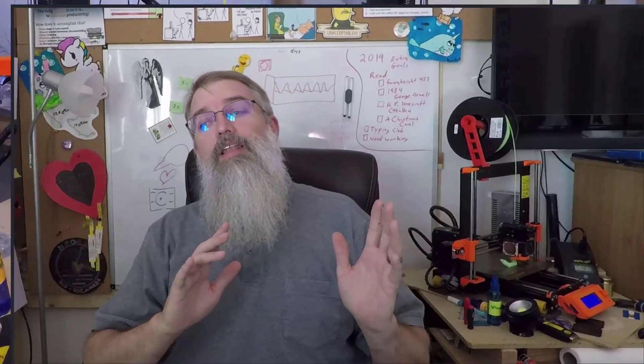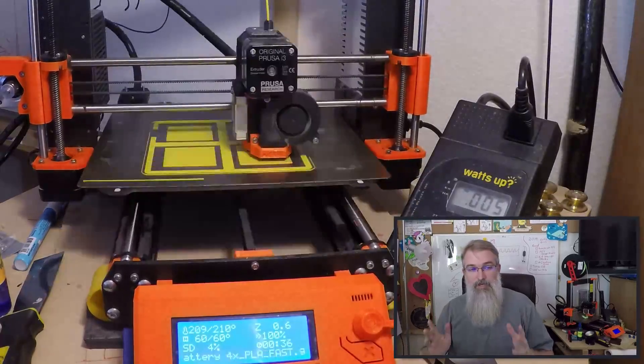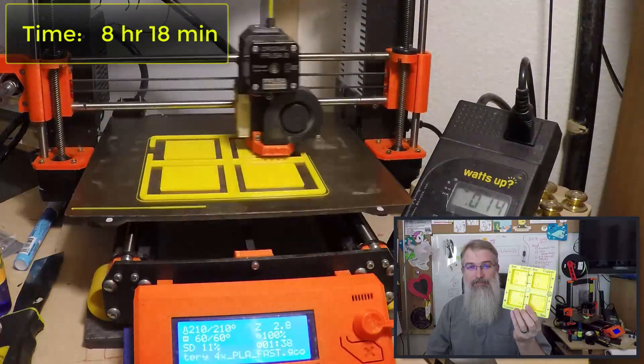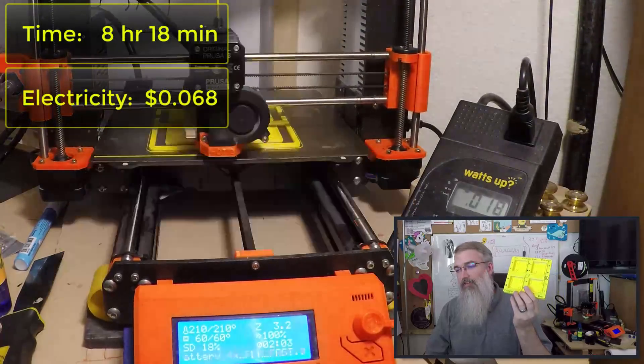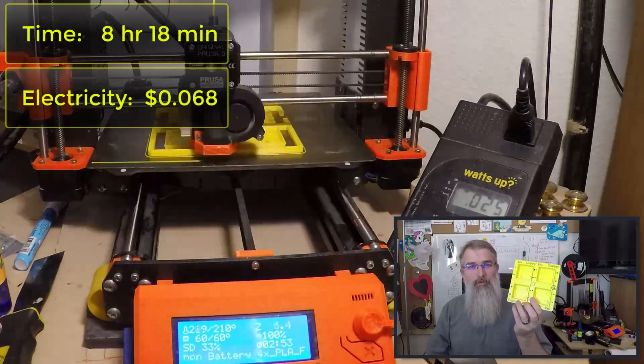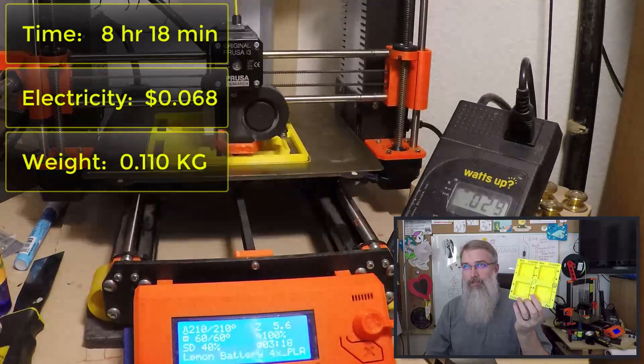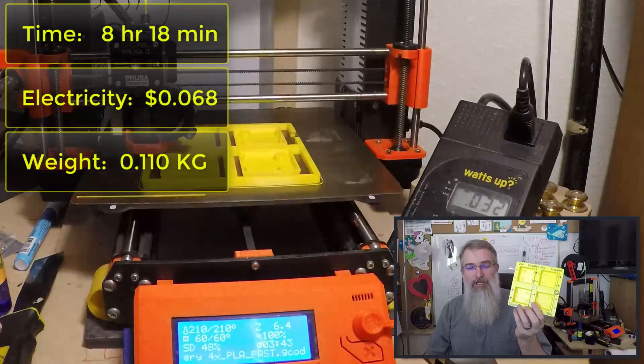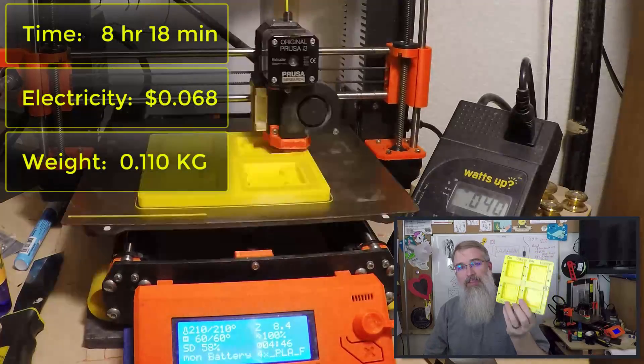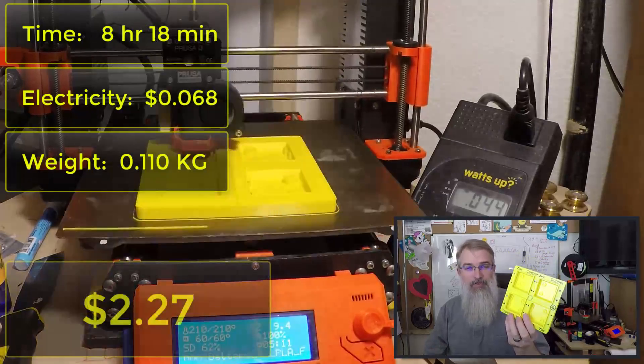Well, enough of that excitement. So now let me go over the numbers. It took eight hours and 18 minutes to print. It took 0.068 with electricity and it weighs 0.110 kilograms, which comes out to $2.20 worth of material based on $20 per kilogram. You add it all together. It's $2.25 to print this whole thing out.